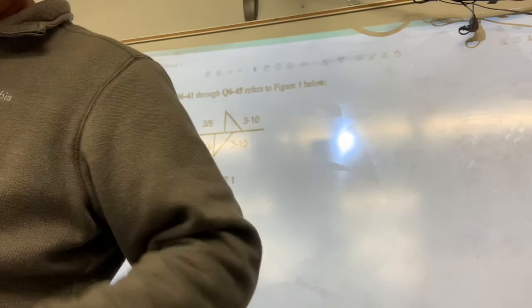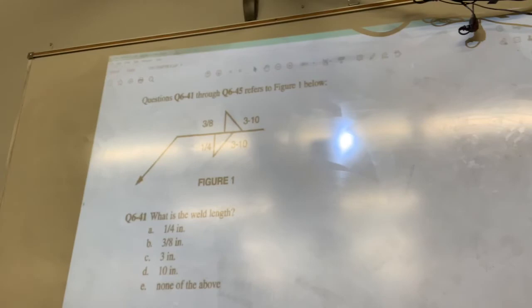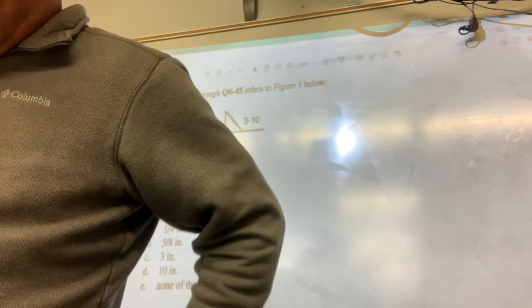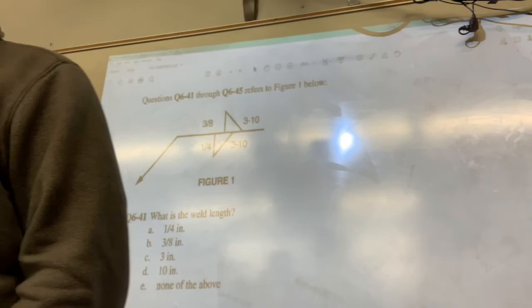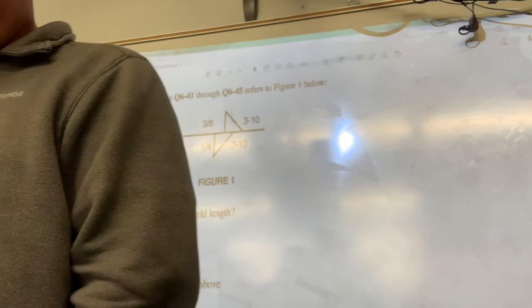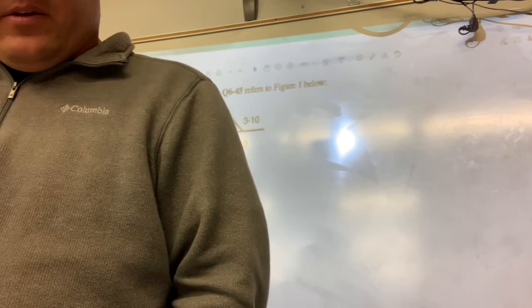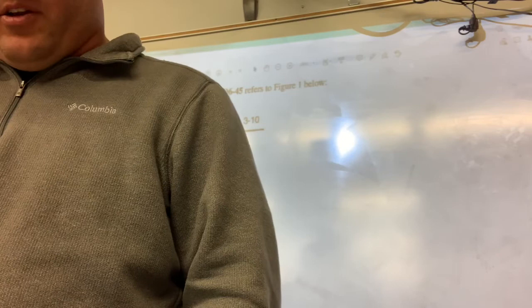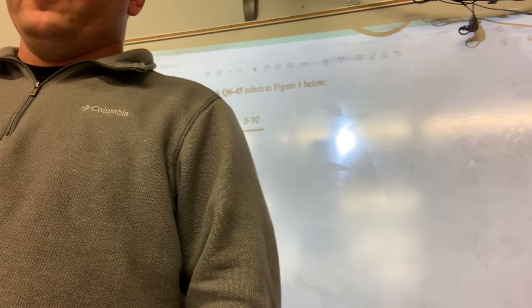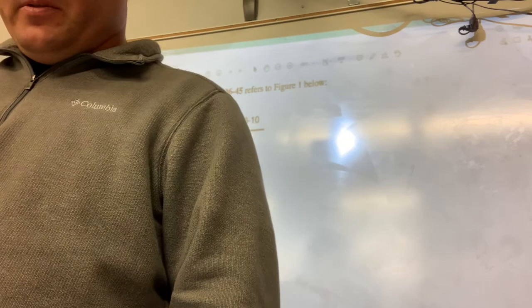41 is C. 42 is D. 43 is A. 44 is D. 45, I got D. Alright, so fillet welds are going to be on both sides. But in this case, they're going to be staggered intermittent because we have the length and pitch, and we also have our little symbols staggered.